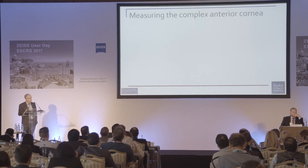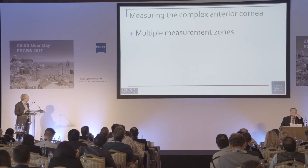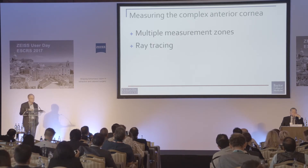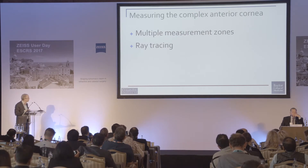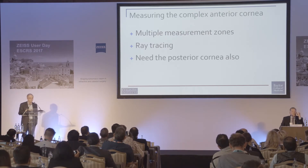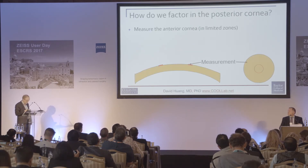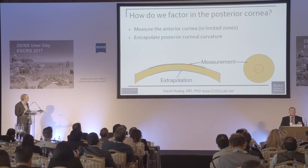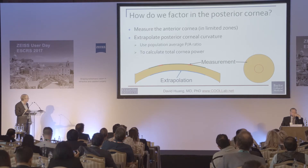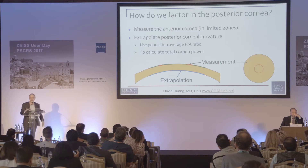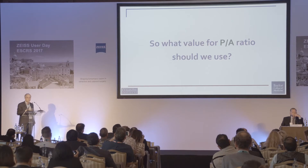For the complex anterior corneal surface, we're going to need multiple measurement zones. I think ray tracing is going to be the future for these corneas to understand and predict the optics better, and we're going to need to measure the posterior cornea. Right now we measure some spots on the front of the cornea and extrapolate to the back, using a population average of the curvature ratio to calculate total corneal power.